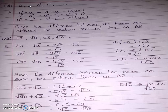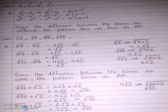We subtract second term minus first term: A² minus A. We take A common to get A(A − 1). Third term minus second term: A³ minus A² equals A²(A − 1). Here you can already see they are not the same. Since the differences between the terms are different, the pattern does not form an AP.